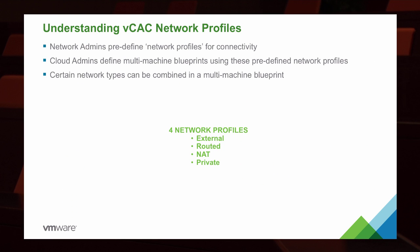If we look at some of the network profiles that can be applied inside of vRealize Automation, the network administrator is going to pre-define the profile for connectivity, and then the cloud administrators are going to define the blueprints that will use those profiles. You can combine certain network types inside of a blueprint to ensure that machines can communicate in different ways. There are really four core network profiles: external only, routed from inside to outside and vice versa, network address translation, or just a private isolated network.